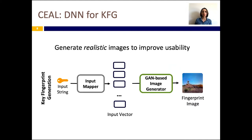In our work, we set out to address these problems. That is, we seek to generate visual key fingerprints that take into consideration the limitations of the human visual system. For this, we leverage studies that have shown realistic images are easier for humans to compare and distinguish. Therefore, we set our goal to generate visual fingerprints that are realistic images. As illustrated in this figure, instead of using handcrafted rules to generate images, we use generative adversarial networks, or GANs, to generate images that look like samples in a real image dataset. In practice, we can use an input mapper to convert the binary input key into a suitable internal representation, which we can then use as the input to the GAN network.